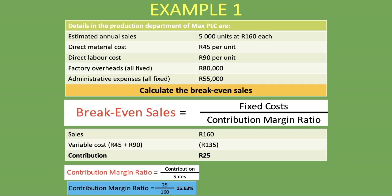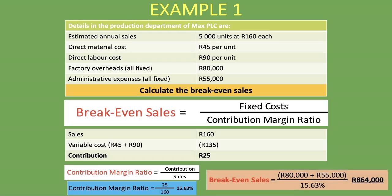Now that we have our fixed costs of R80,000 plus R55,000 and our contribution margin ratio, we can calculate break-even sales. We take R135,000 divided by the contribution margin ratio of 15.63%, which gives us break-even sales of R864,000. This means if you make sales of R864,000 you will break even. Using the second formula — break-even quantity multiplied by the selling price of R160 — gives you the exact same answer of R864,000.